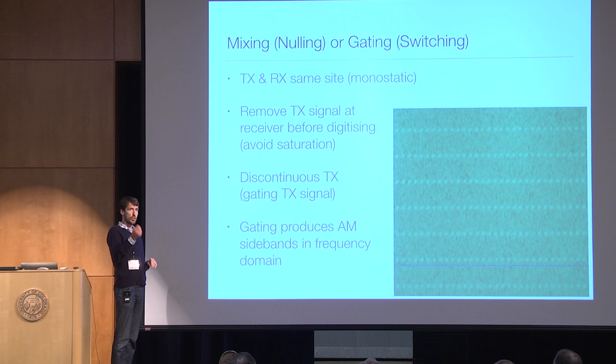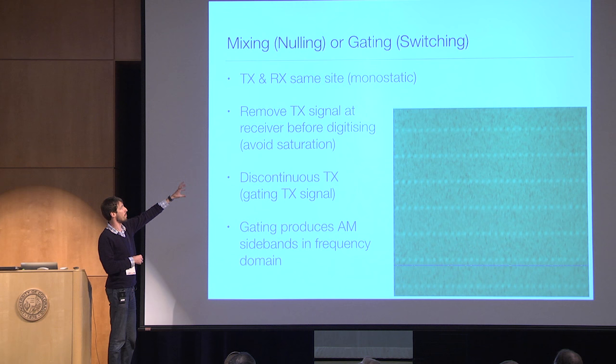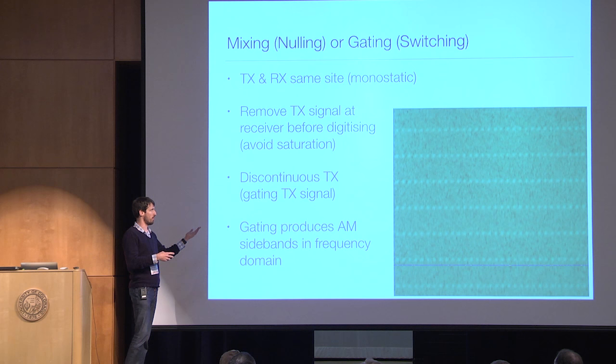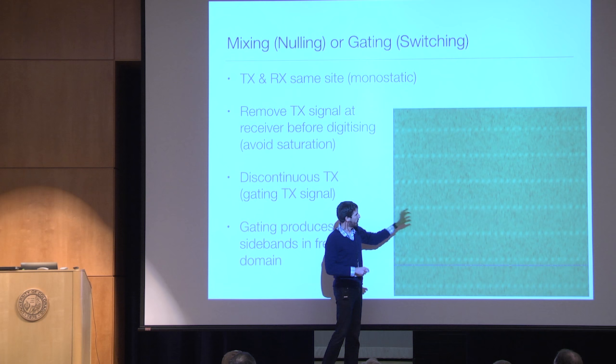You can transmit and receive at the same time with a monostatic setup. You can remove the transmit signal from your receive signal by mixing it out and nulling it before the analog-to-digital converter, which means you don't overload your front end. Or you can transmit and then go silent very, very quickly — which is gating the signal.